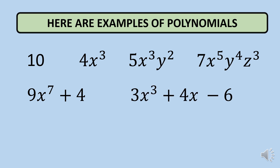Next, you have 3x raised to 3 plus 4x minus 6. You just need to check if the exponent is positive and a whole number. It is a whole number and it is positive, so yes, it is a polynomial.